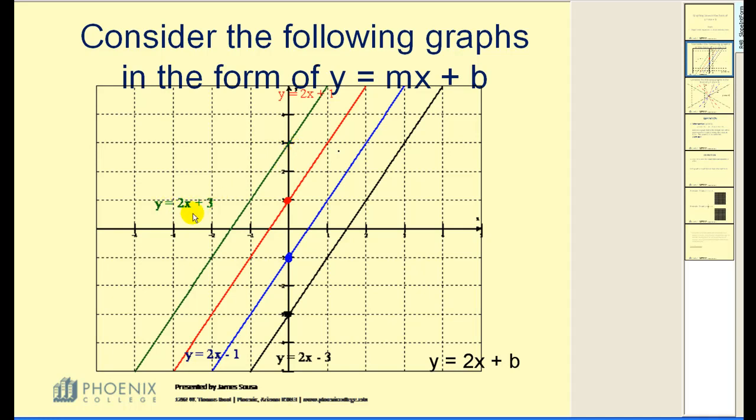The green line crosses the y-axis at positive 3 with an equation of y equals 2x plus 3. So as you can probably notice, there is something of a pattern going on here.